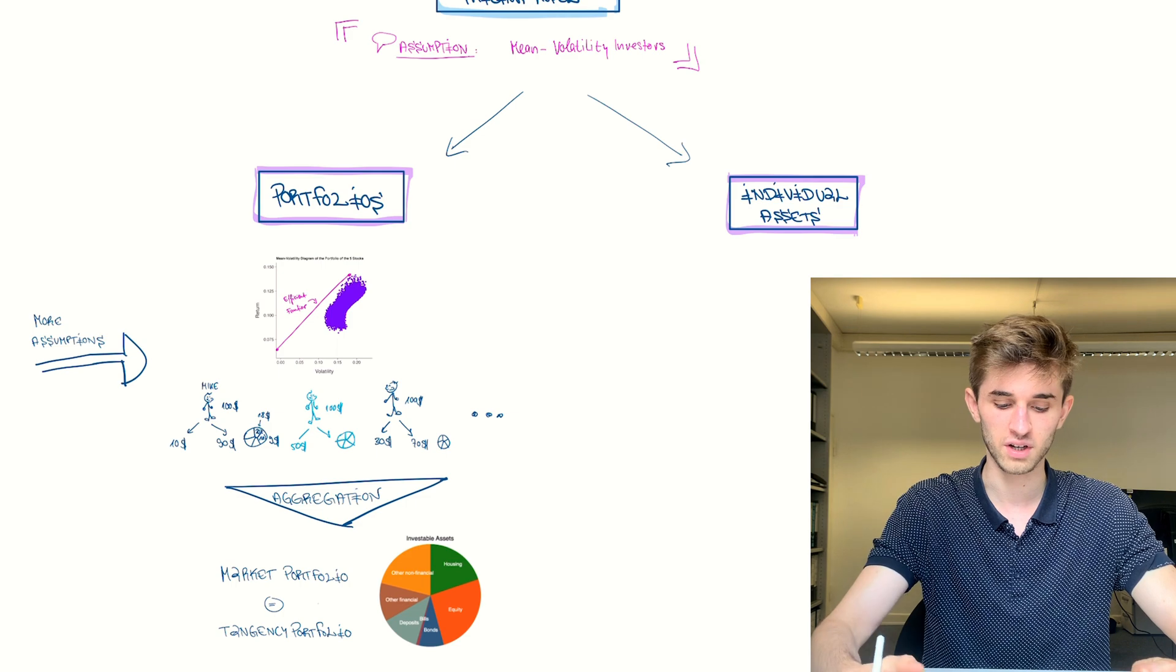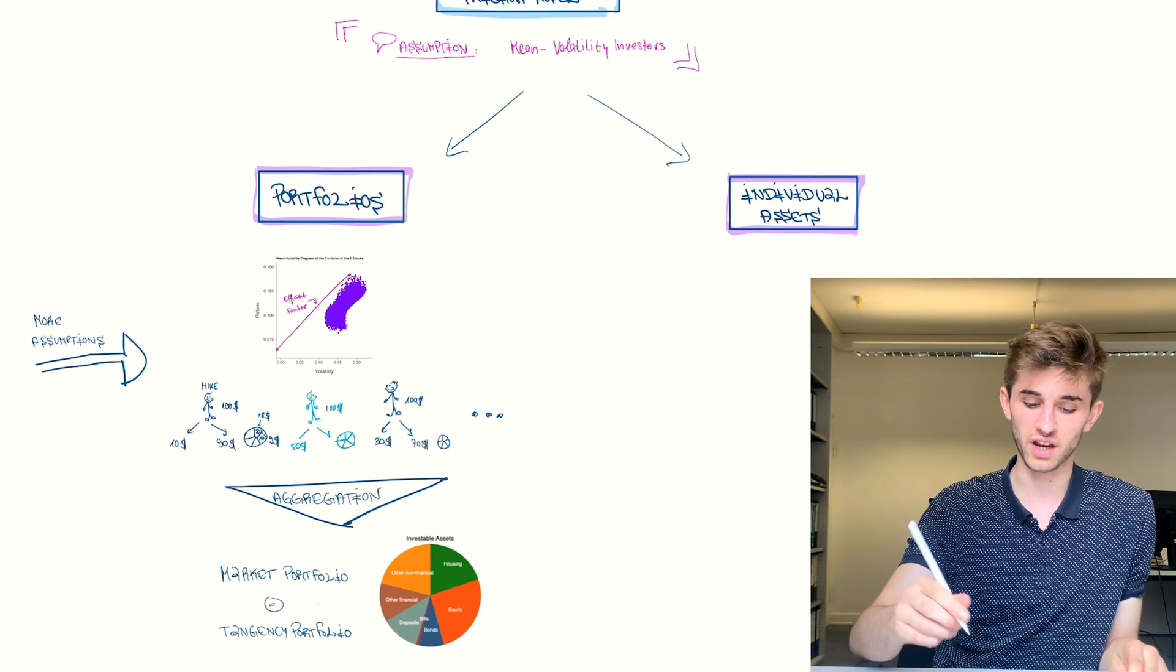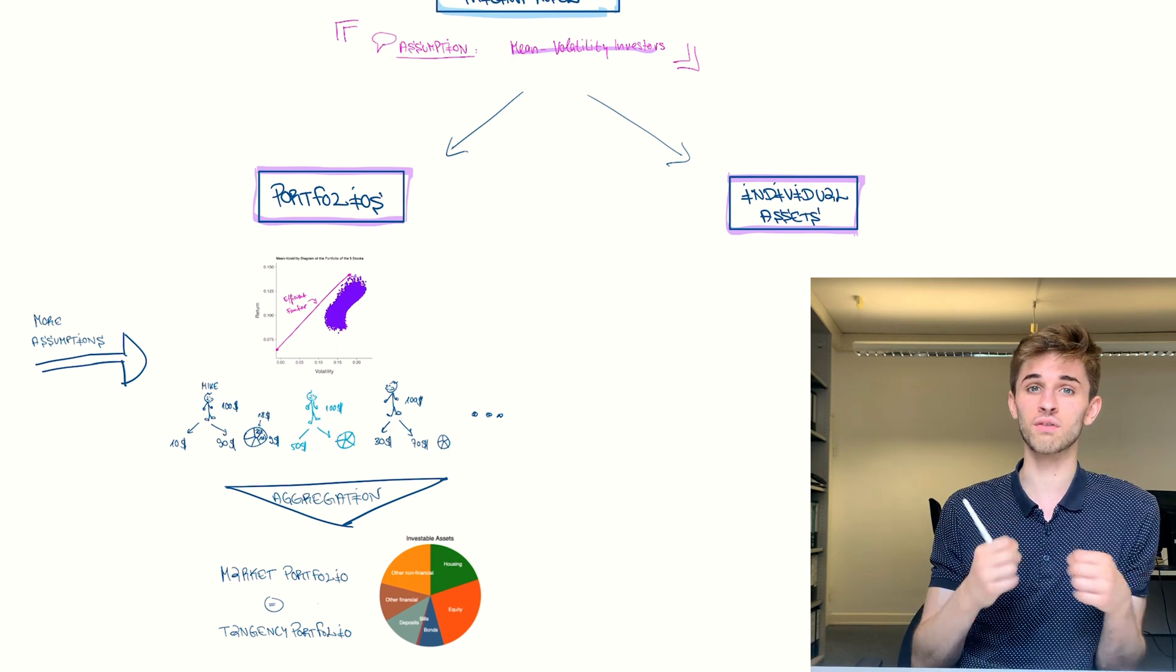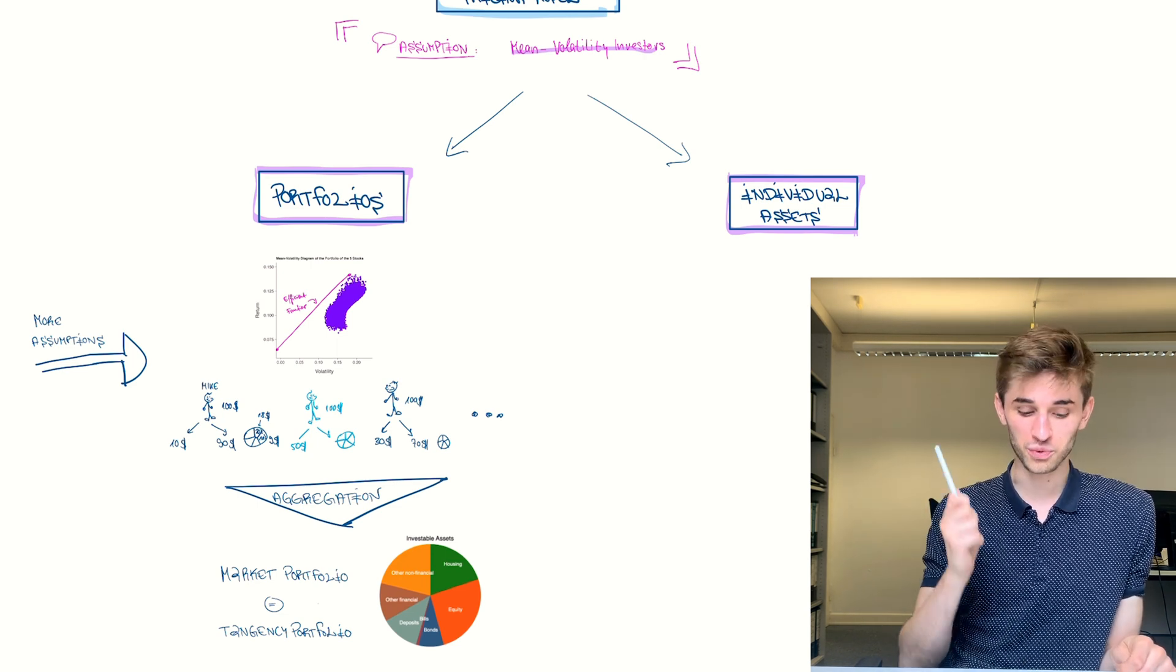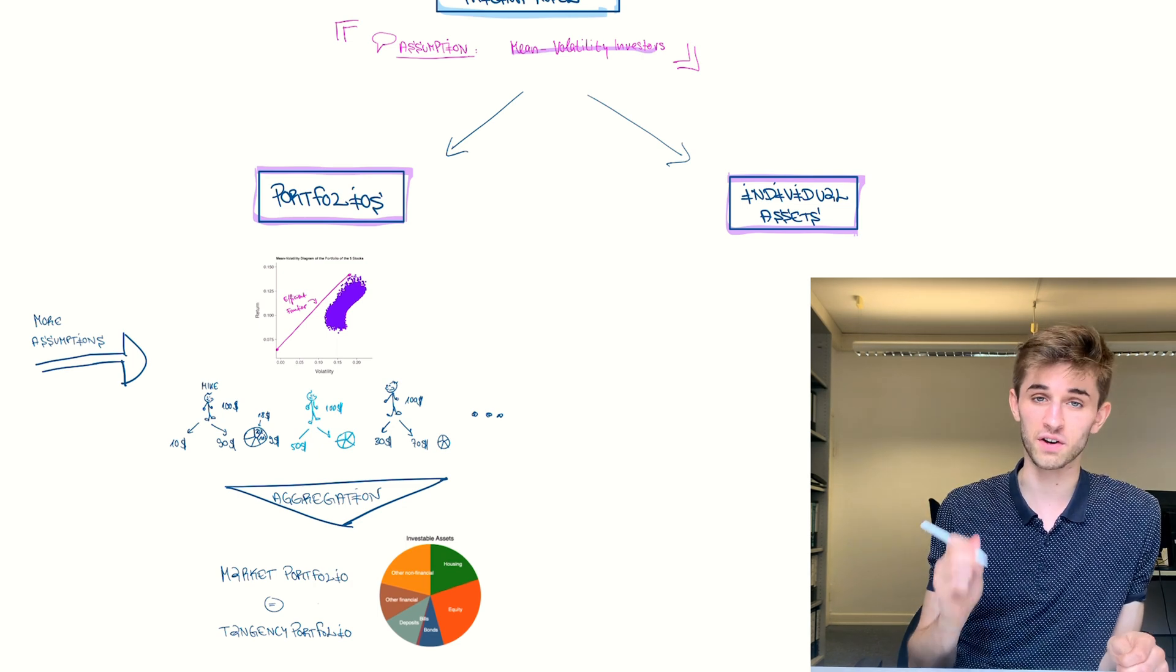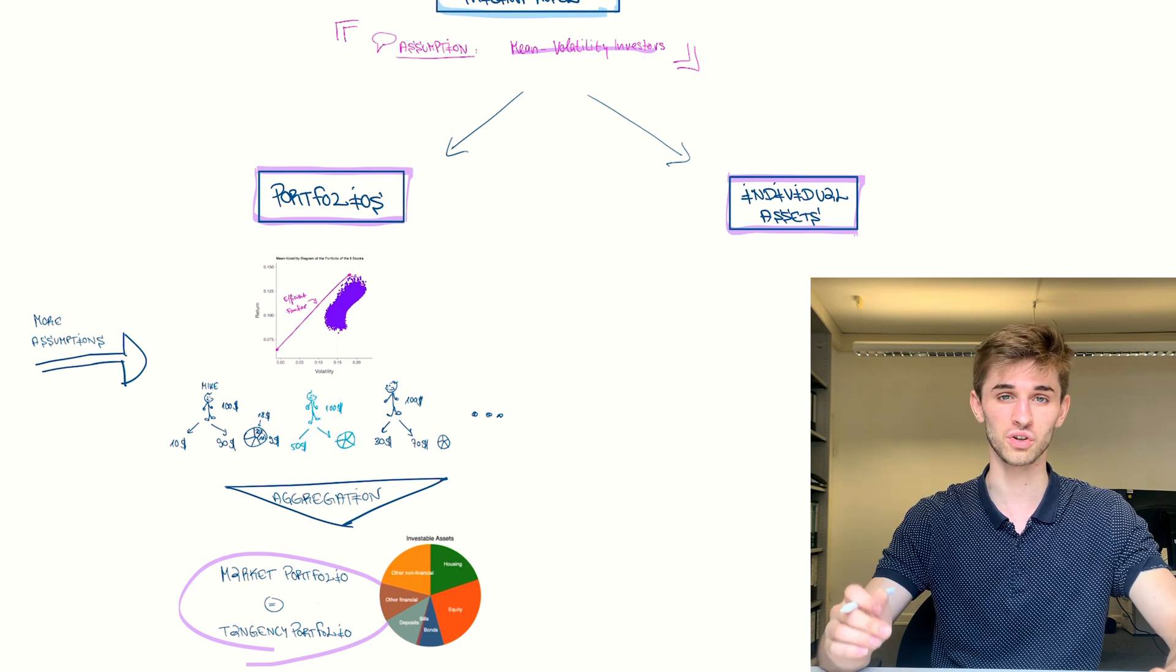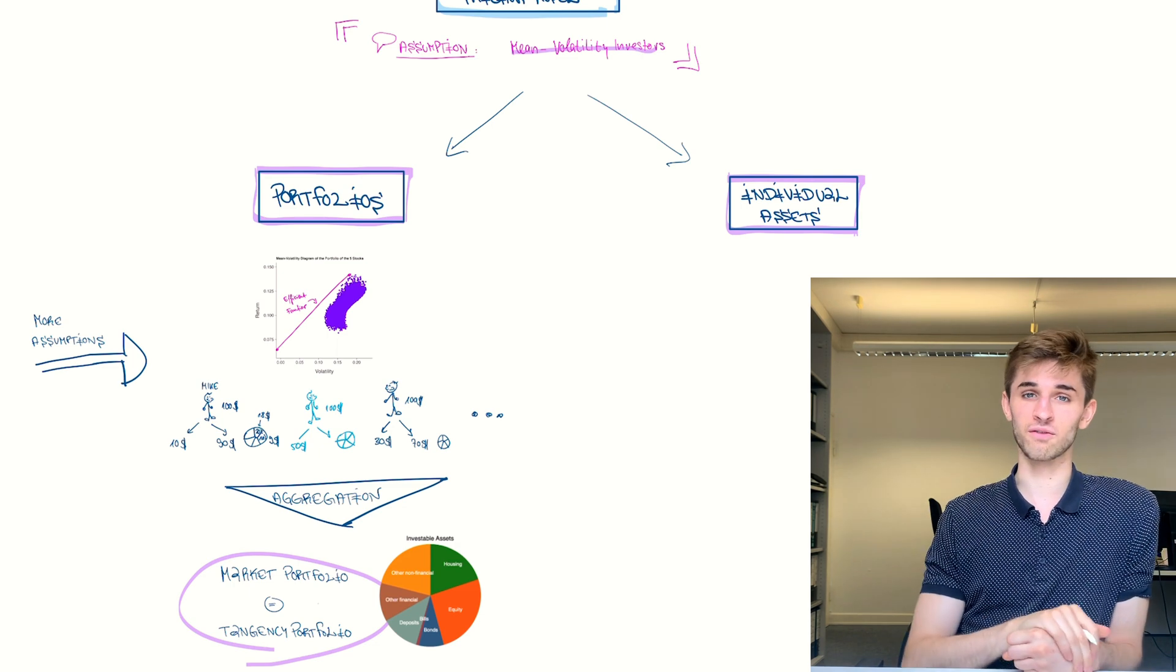Quick review of what we did in the last video. We said the capital asset pricing model is a model that thinks about a very special world, a world in which every investor is a mean volatility investor. So everything that the investor cares about is just the mean and volatility of his overall portfolio. And we said if we make that assumption we get a surprising result. We get the result that the market portfolio, the portfolio that the overall market is holding, is very special. It's the tangency portfolio, the optimal portfolio that every single investor in that mean volatility world should hold. And in this video we're still going to use our assumption: everybody is a mean volatility investor.